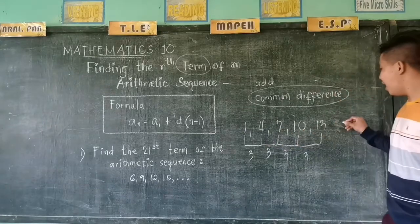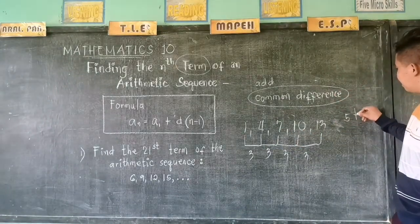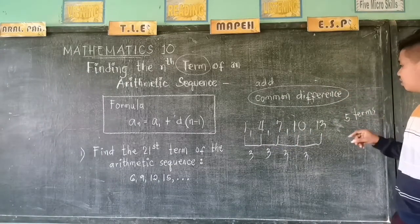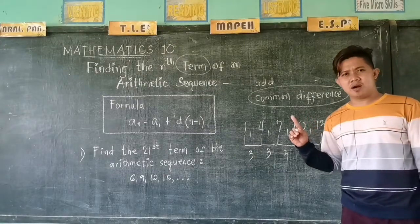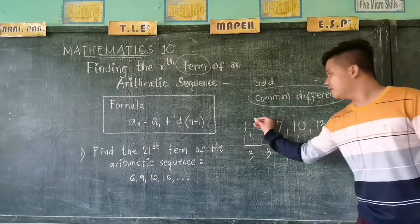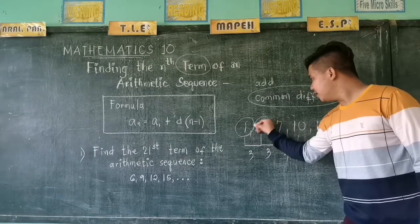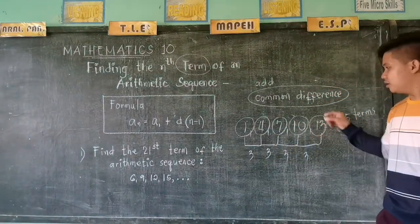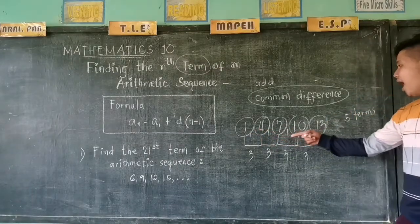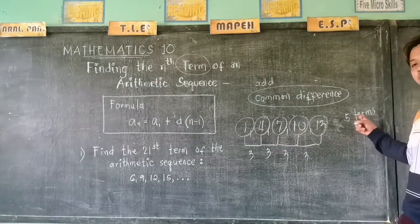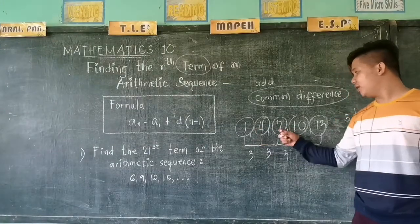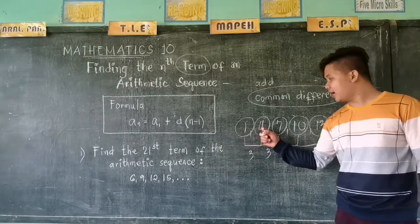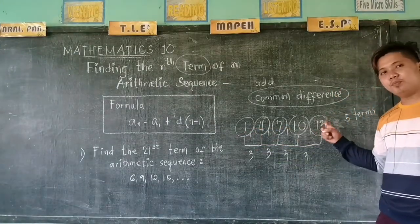In this example, there are 5 terms. What is a term? This one is a term. Those are terms. So when we say how many terms, we have 5 terms: 1, 2, 3, 4, 5. First term, second term, third term, fourth, and fifth.